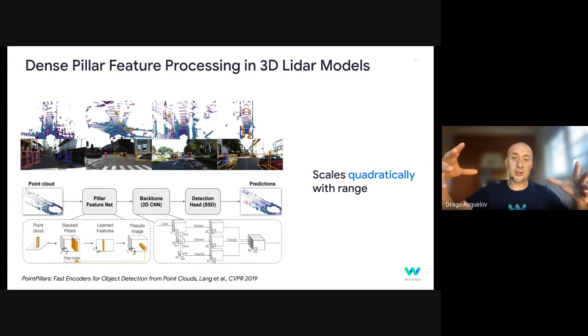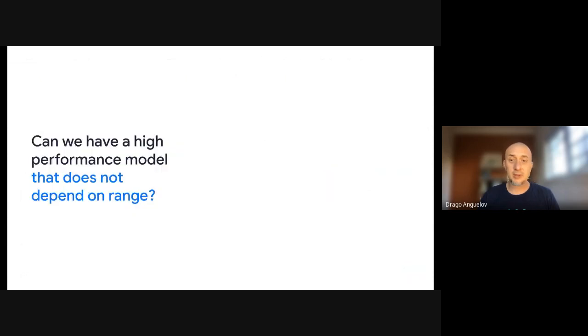And as our lidars have been improving themselves dramatically over the last few years, the range has become 200, 300 meters. At such range, it starts becoming prohibitive, creating and maintaining this dense top-down bird's-eye view with pillars. And so maybe a couple years ago, we set ourselves the challenge. Can we have a high-performance model that actually does not depend on the range?